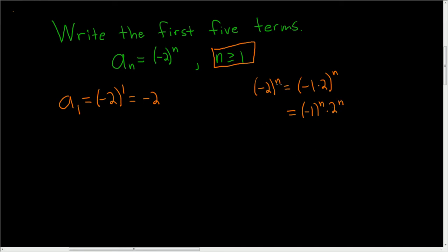So whenever you have an even number here, you're going to have an even number here. And negative 1 to an even number is 1, and negative 1 to an odd number is negative 1.